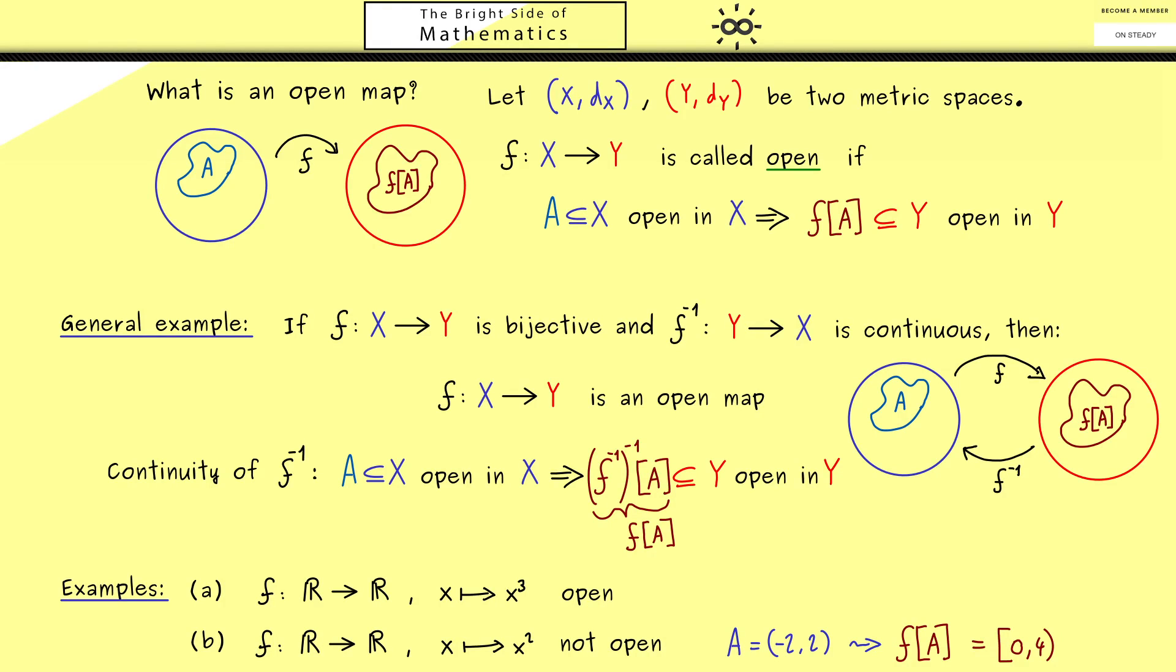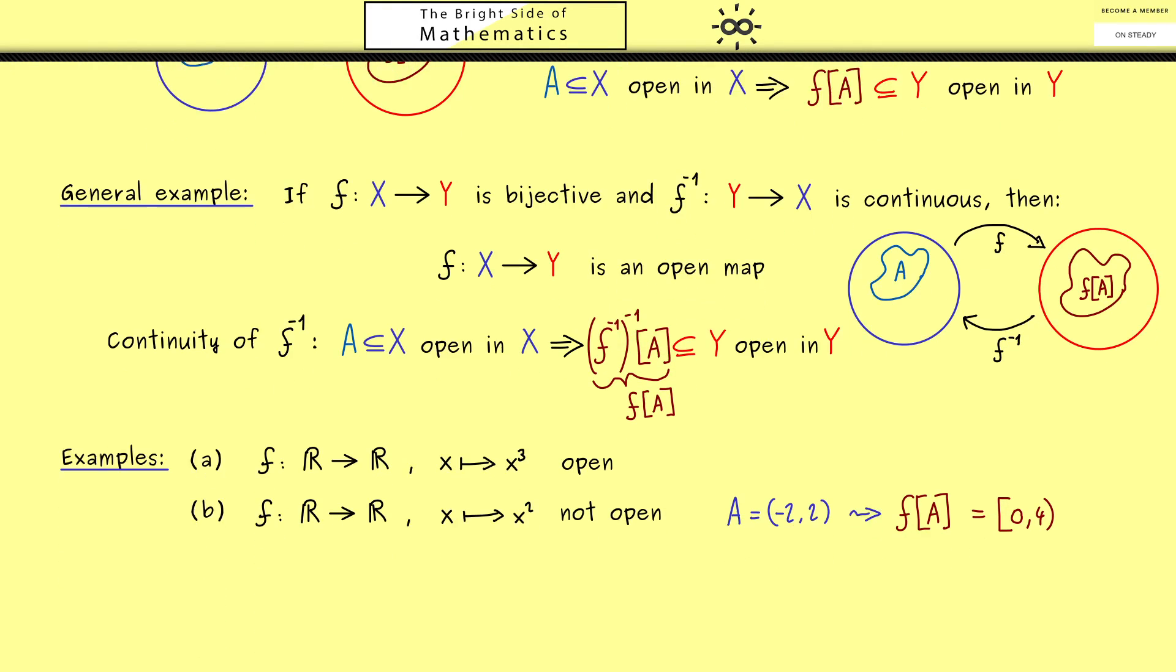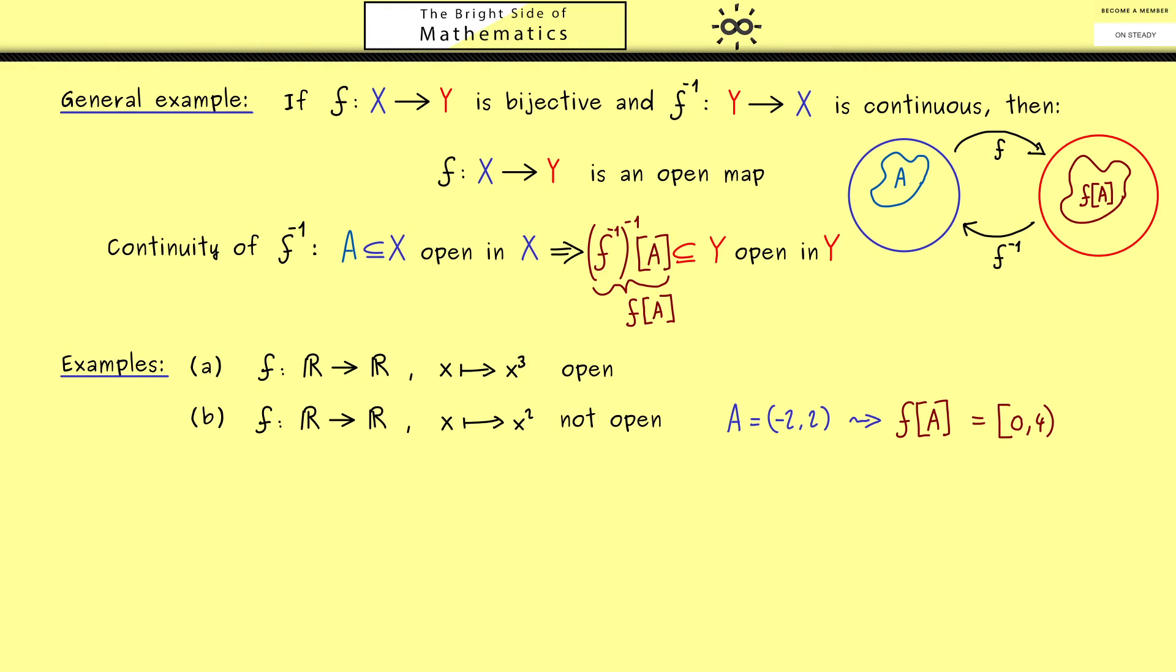Now with your new knowledge of what an open map is, we can finally state the open mapping theorem. The important ingredient you always should remember here is that we need Banach spaces on the left and the right-hand side. So the completeness of the spaces is essential here.